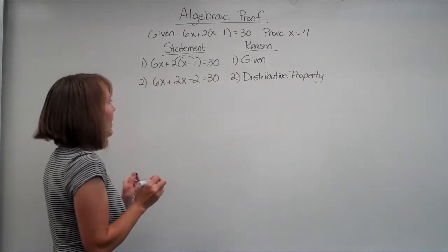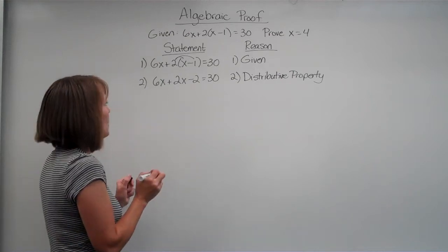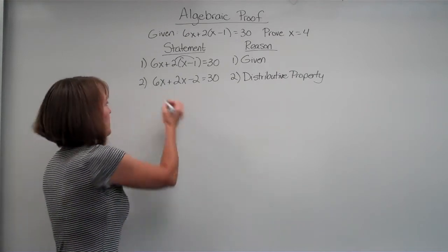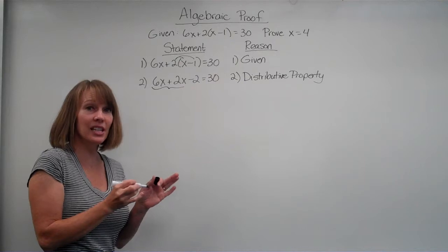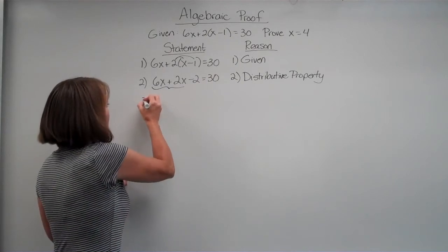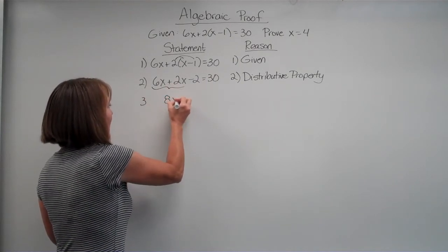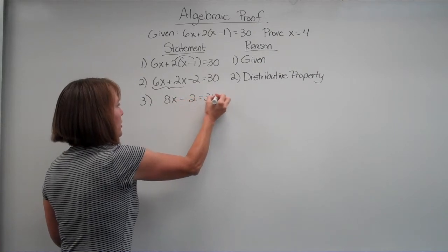Alright, what would I do next? Well, I would be able to combine the like terms, right? I can put together 6x and 2x. So if I do that, I'm going to get 8x minus 2 is equal to 30.